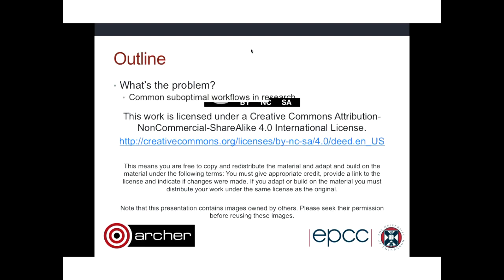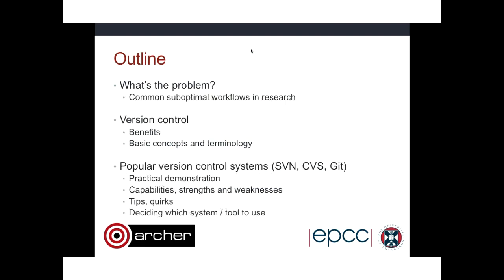The outline of this talk: first we'll talk about what the problem really is — why do we need version control? It turns out that many of us, when dealing with files — whether software, source code, programming, or documents — are quite sloppy. That can be fine for small projects, but over time it can lead to confusion, and what seems to save time in the beginning can end up causing problems, possibly even retracted papers if results are based on code that wasn't the version you thought.